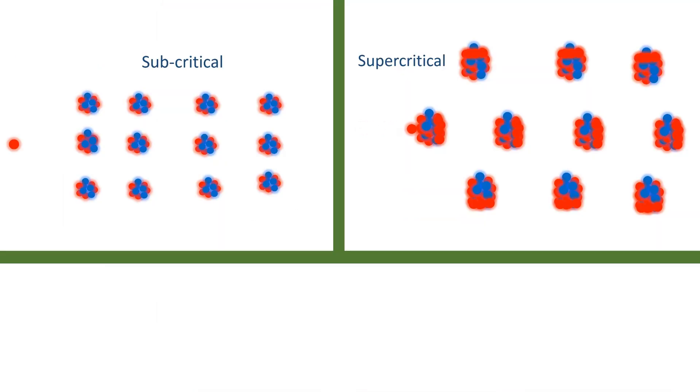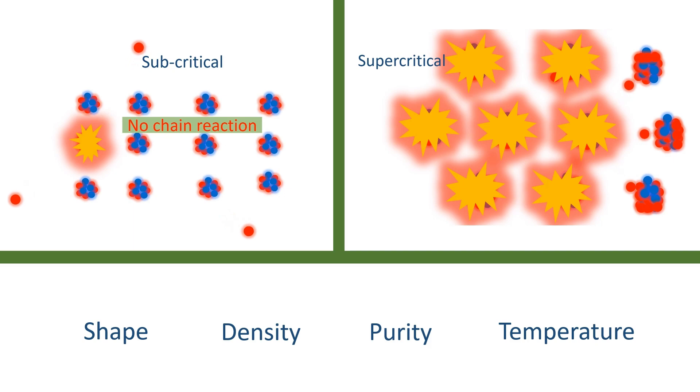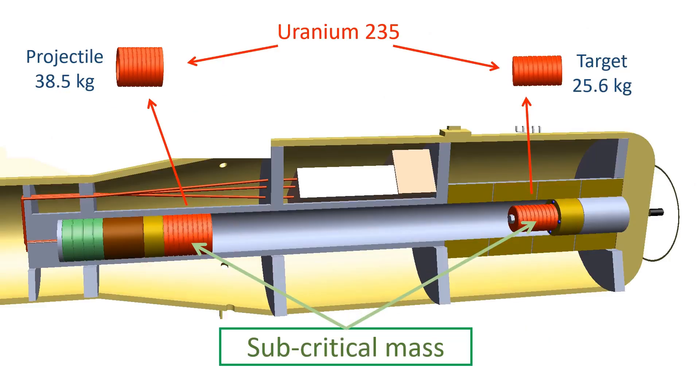A material like uranium-235 can be converted from sub-critical to super-critical by altering its shape, density, purity, or temperature. So for safety purposes, the uranium must be kept in a sub-critical state to prevent accidental detonation.